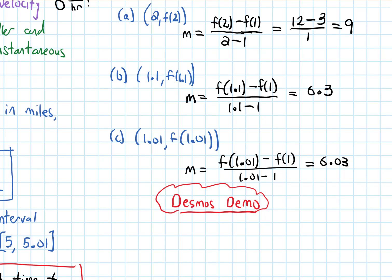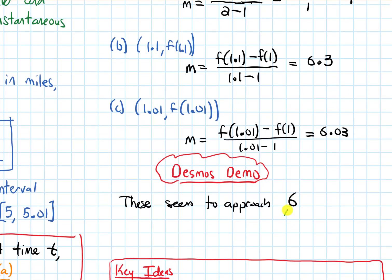Alright, so returning to the notes here, the values that we were getting for the slopes of the secant lines, these values seem to approach 6. They seem to approach 6. And that is what we are going to estimate as the slope of the tangent line.